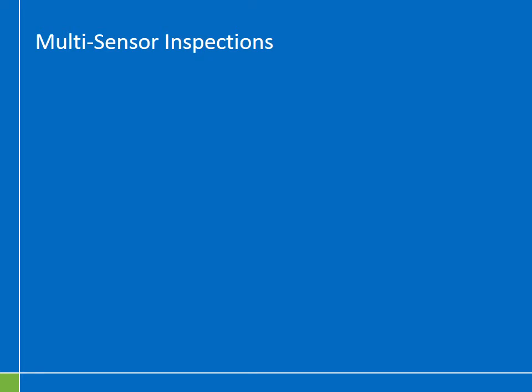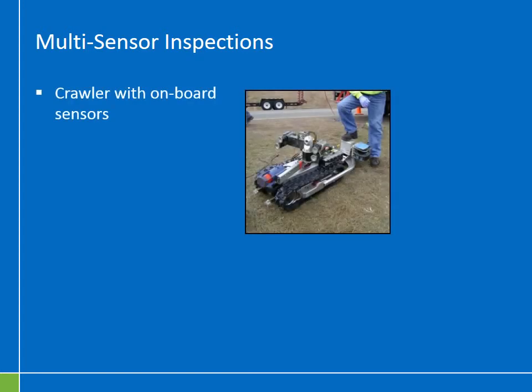The next enhanced inspection technology is multiple sensor inspections. A multiple sensor inspection unit is a crawler similar to a CCTV crawler, to which various sensors are attached. As the crawler drives through the culvert, it collects data about the internal condition, and that data can be evaluated to give very detailed documentation of the geometry or condition inside that pipe.